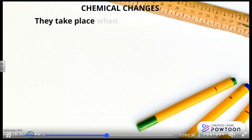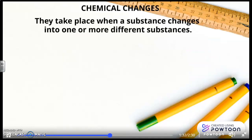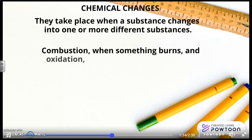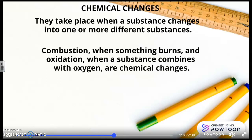Chemical changes take place when a substance changes into one or more different substances. Combustion, when something burns, and oxidation, when a substance combines with oxygen, are chemical changes.